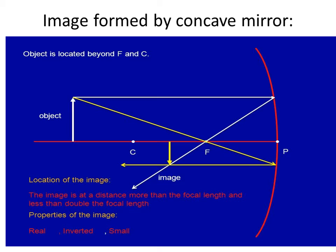Image formed by concave mirror when the object is beyond F and C, means beyond C. The two rays meet between C and F, so the image will be formed here. The image will be inverted, real, and diminished in size.